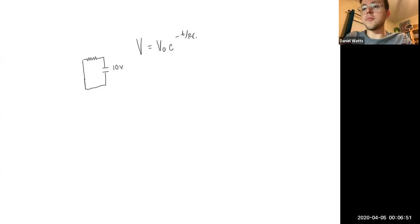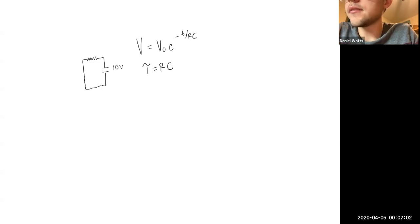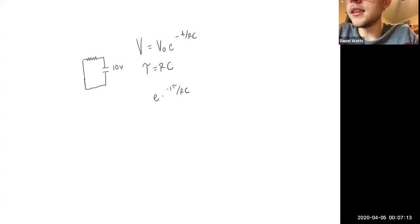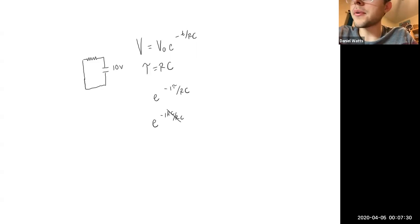You can do the same thing with time constants as we did with charging, where the time constant equals RC. To find the voltage after one time constant, you plug in RC for the time, giving you e to the negative one RC divided by RC. You can cross those out, and e to the negative one in your calculator gives you 0.382.